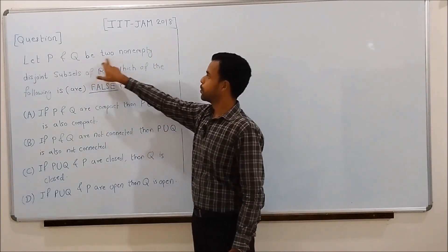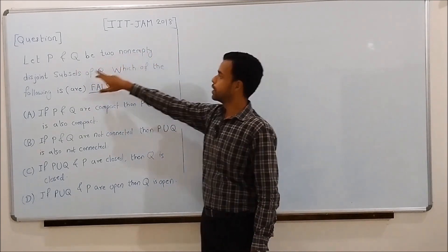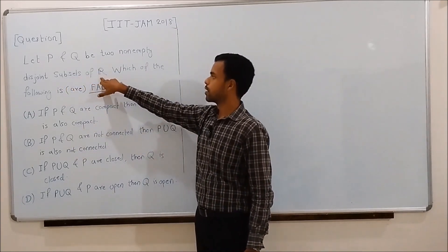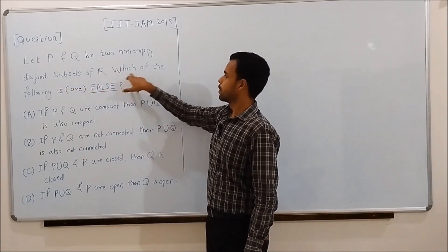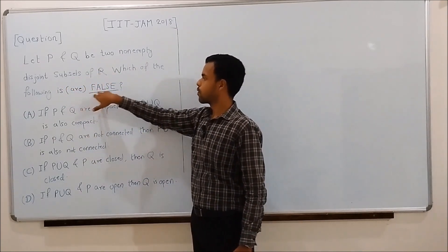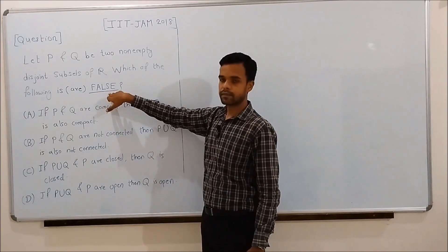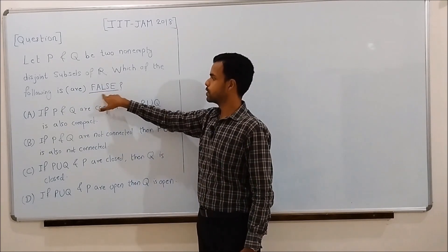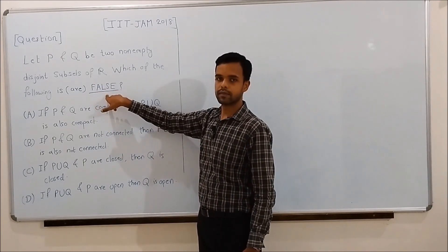Let P and Q be two non-empty disjoint subsets of R. Then, which of the following is or are false? That is, we have to select the options which are false.